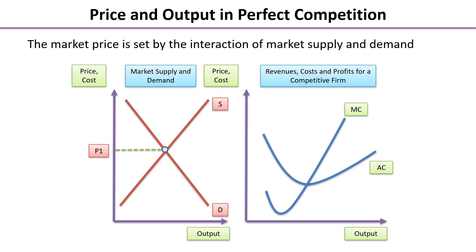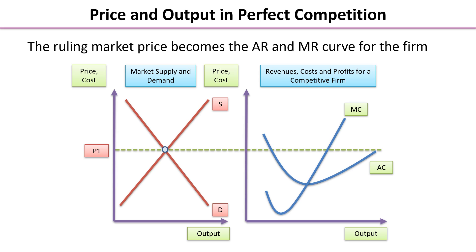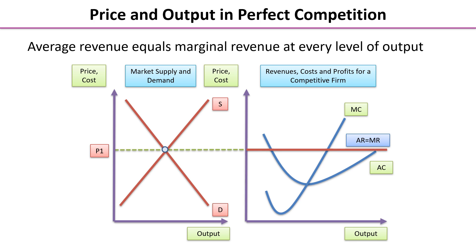The way all of this works is that market forces give us our equilibrium price in the overall market — that's P1 on the left-hand diagram. Individual firms in this market are price takers, so P1 is the prevailing market price they must accept. This means the demand curve is the average revenue curve, and because it is completely elastic, AR equals MR.